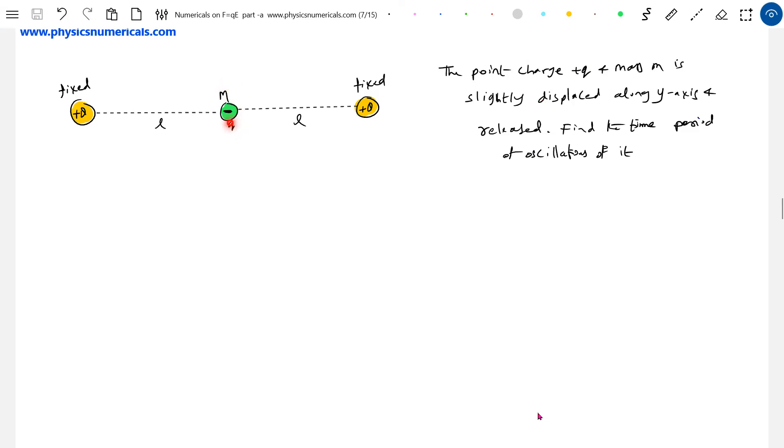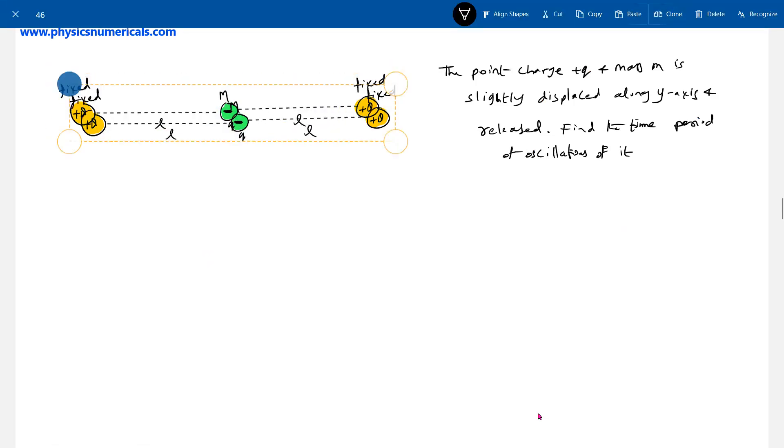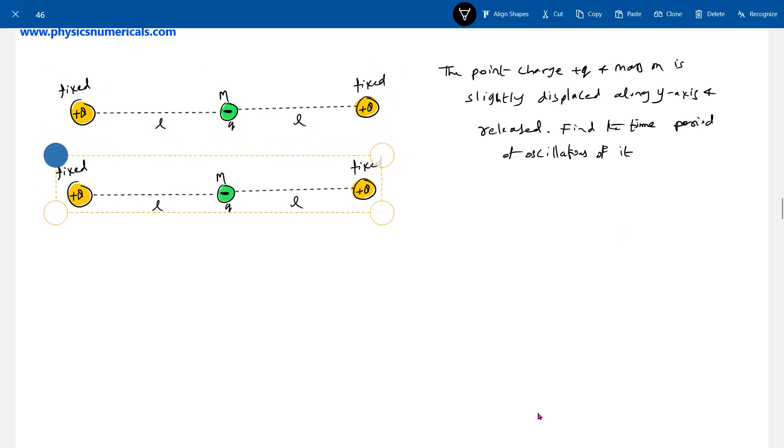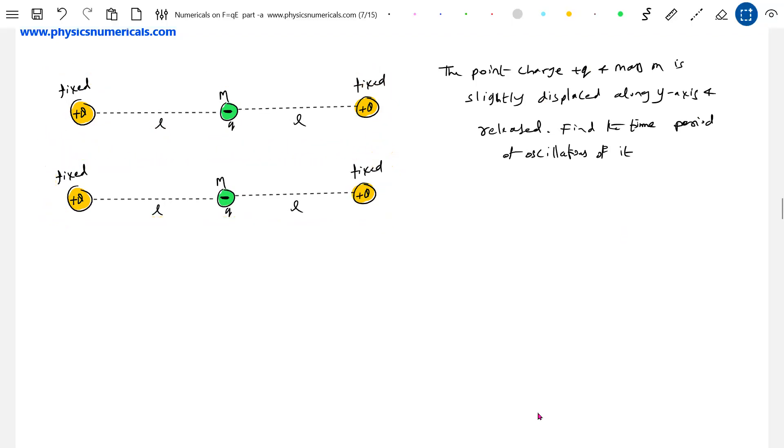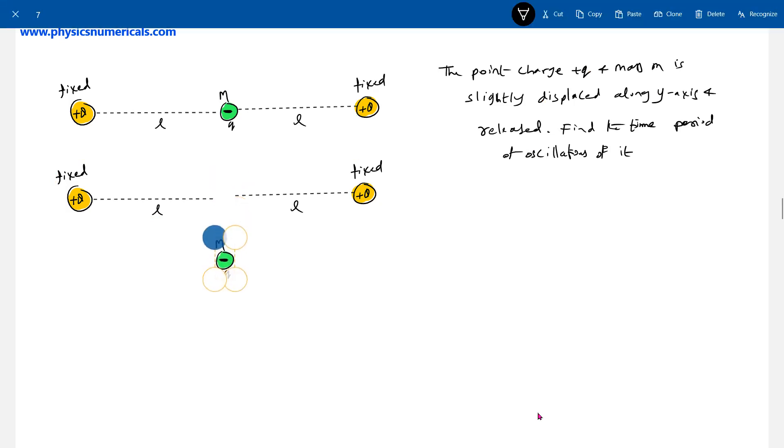If a point charge is displaced along the y-axis and released, it's going to execute SHM. Let's find the time period of oscillations. Let me take the same diagram - it's going to execute SHM here.